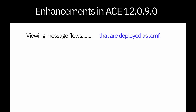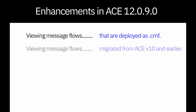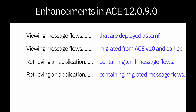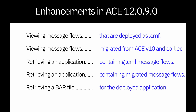In this video I've shown several enhancements provided in 12.0.9: message flows deployed as CMF can now be viewed; message flows migrated from version 10 and earlier to version 12 can also be viewed; you can retrieve an application that contains CMF message flows; you can retrieve an application that was migrated to version 12; you can retrieve a bar file from a deployed application; and if you have a bar file that contains source, you can import projects from that bar file.